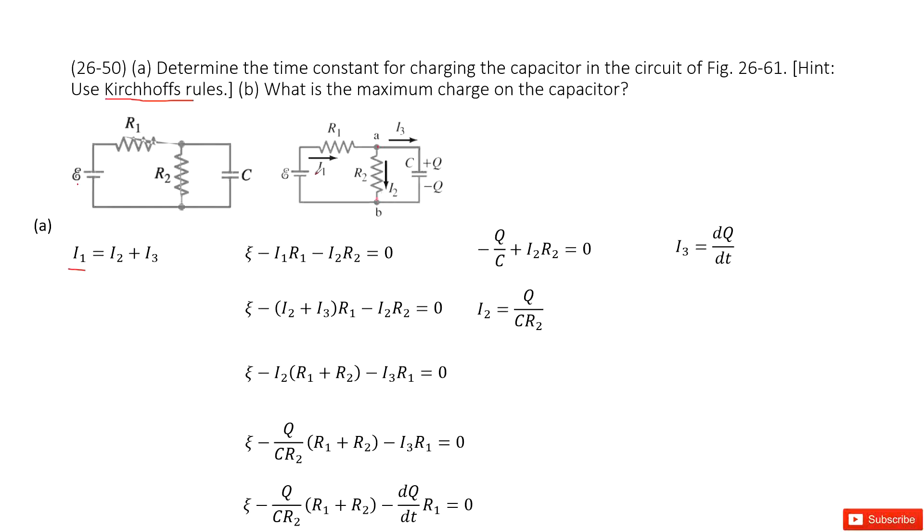And then we look at the first loop, this one. So the battery increases the voltages. So we have epsilon. And then the current goes through resistor. Voltage decreases. So minus I1 times R1. The current goes through resistor R2. So the voltage decreases. I2 times R2 equals 0. So we write it there.